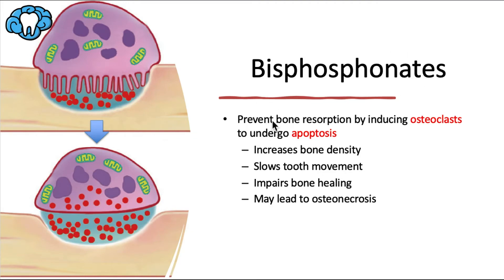Bisphosphonates primarily work to prevent bone resorption by inducing osteoclasts to undergo apoptosis, which is controlled cell death. In doing so, it increases your bone density or mineralization — that's a good thing in most cases. But it also slows tooth movement, which would lengthen orthodontic treatment time.